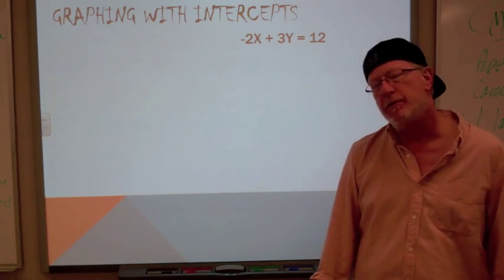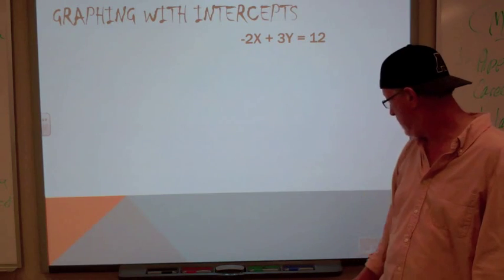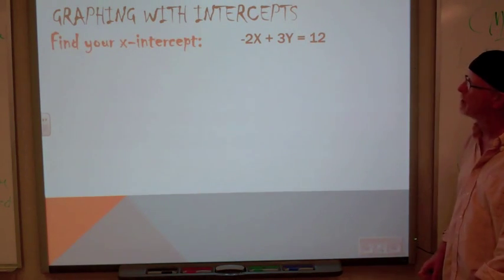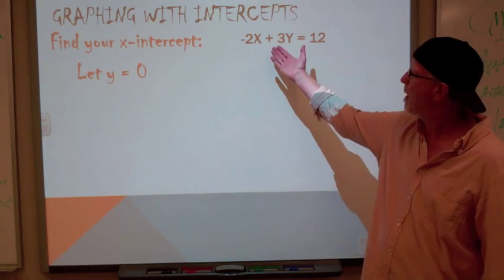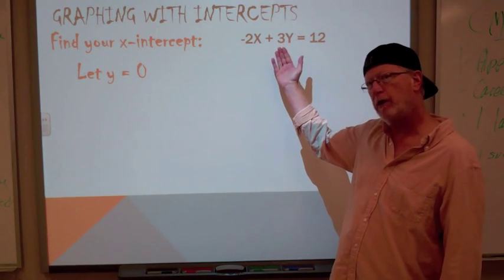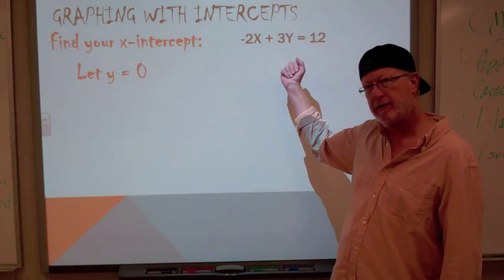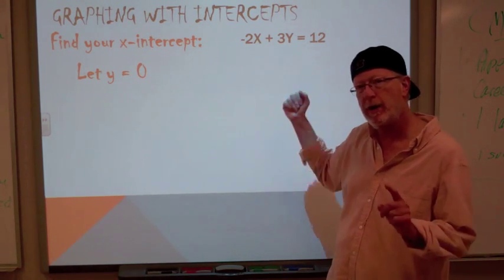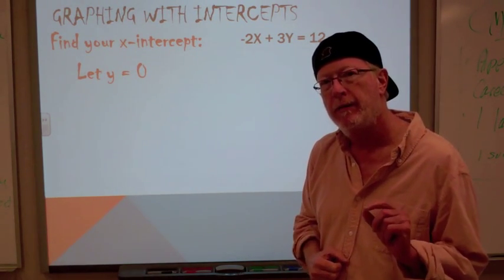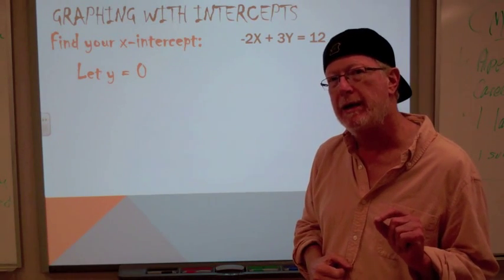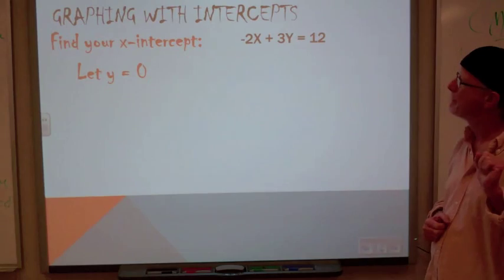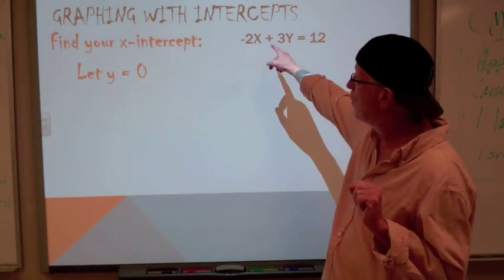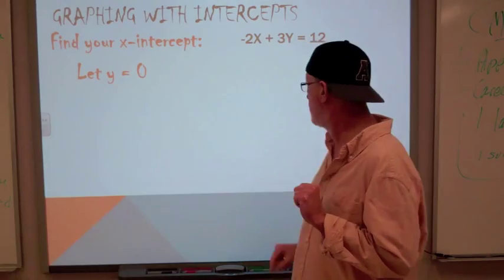Now, how do we graph with intercepts? This is something we haven't discussed yet. Let's take a look at what we're going to do with this process. First thing we're going to do is find the x-intercept. If we've got a problem in this format, can you think of a way to find the x-intercept? Remember now, the definition. The x-intercept is where the y is zero.